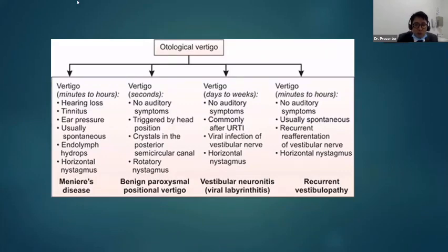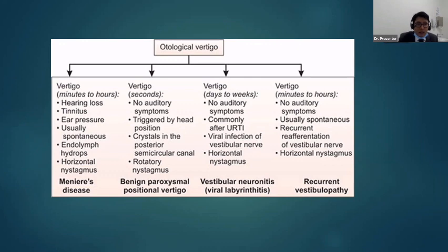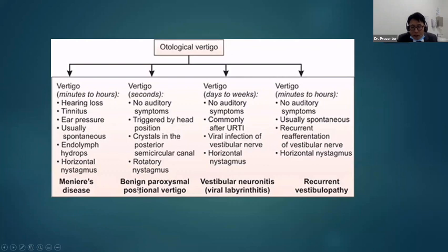The peripheral causes of vertigo — hearing loss duration is minutes to hours, seconds for benign position. If someone comes with hearing loss and tinnitus, longer duration, more deafness — think Meniere's disease. Benign positional vertigo: very short duration, not associated with hearing loss. Vestibular neuronitis may last days or weeks with vertigo minutes to hours, and maybe recurrent vestibulopathy.